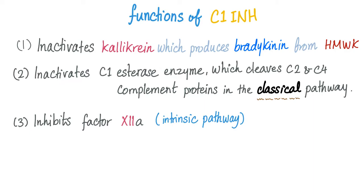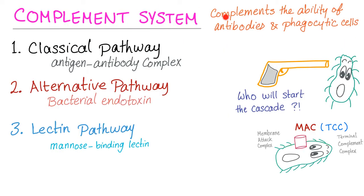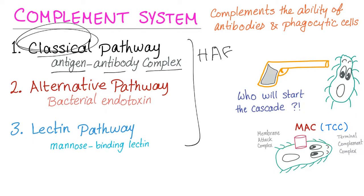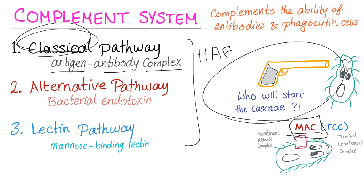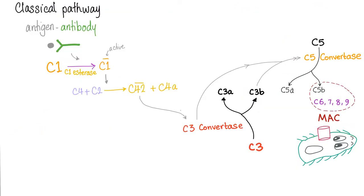Functions of C1 inhibitor under normal conditions: it inactivates kallikrein, which produces bradykinin. It inactivates C1 esterase enzyme, which cleaves C2 and C4 components of the classical pathway complement. It also inhibits factor 12a in the intrinsic pathway. The complement system complements the job of the antibody. We have three pathways: classical, alternative, and lectin. In hereditary angioedema, it's the classical pathway that's involved. An antigen-antibody complex pulls the trigger and starts the complement cascade.